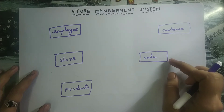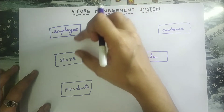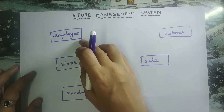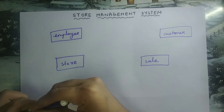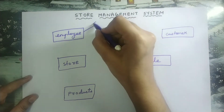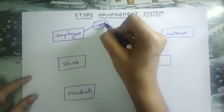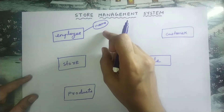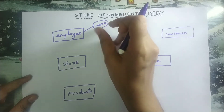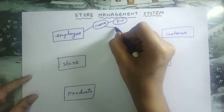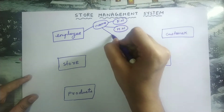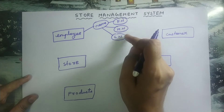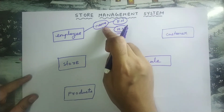The next step is we need to write the attributes corresponding to each entity. An attribute is nothing but the characteristics of the entity, and we need to write the attributes inside an oval shape. For employee, there will be a name — this name is a composite attribute, meaning you will be able to divide it further as first name, middle name, and last name. Since you are able to divide this name attribute further, it is known as a composite attribute.